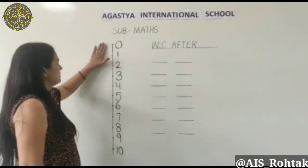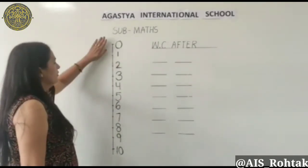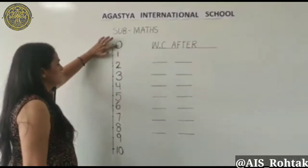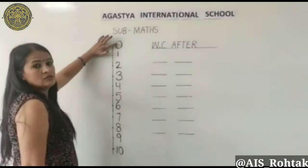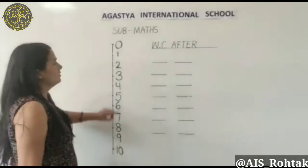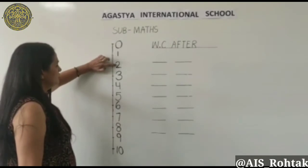What is this? This is a number line. And what is this? This is 0. There are numbers 0 to 10 on it. 0, 1, 2,